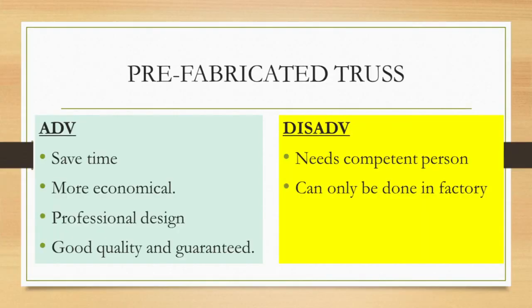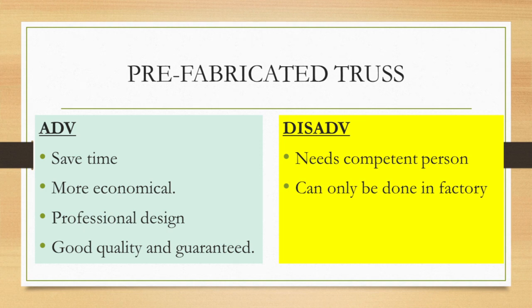In terms of advantages and disadvantages of the prefabricated truss: if you buy the truss from the factory, it is already constructed and you just place it on top of the building to complete the roof. It saves time because you don't have to construct any part of the roof truss on site. It is more economical — whatever wastage would have occurred on site happens in the factory. It is professionally designed, so you have assurance, good quality, and it is guaranteed.